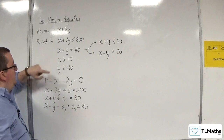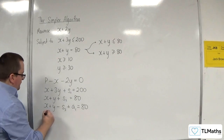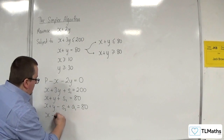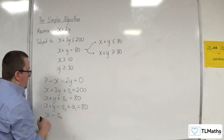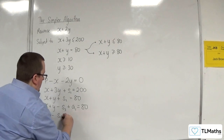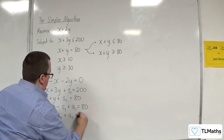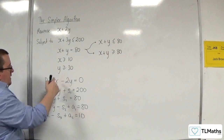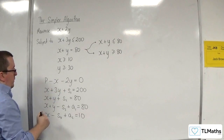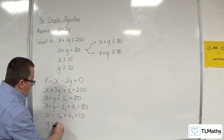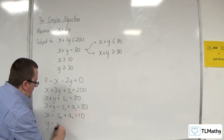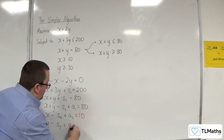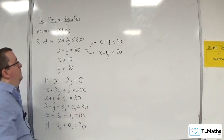For x is greater than or equal to 10, we have x take away a surplus variable plus an artificial variable equals 10. And for y is greater than or equal to 30, y take away a surplus variable plus an artificial variable is equal to 30.